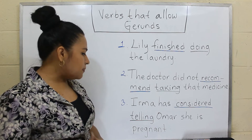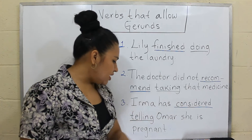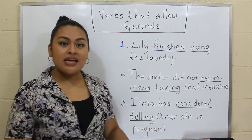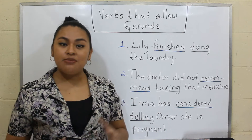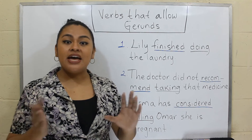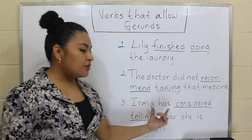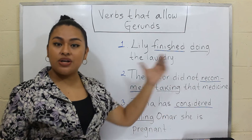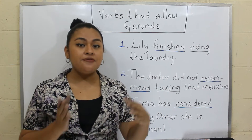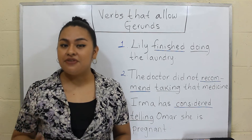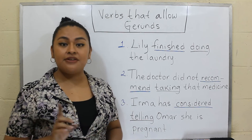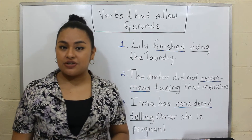And in the last example: 'Irma has considered telling Omar she is pregnant.' In this example, the main verb is 'considered,' and then we have a gerund phrase: 'telling Omar she is pregnant.' So in all these cases, we must have a gerund or a gerund phrase after the main verb. We cannot have an infinitive or an infinitive phrase after these verbs.